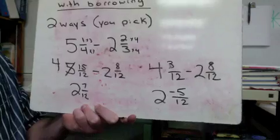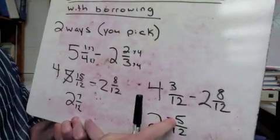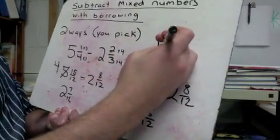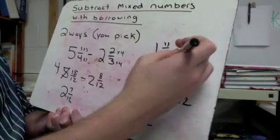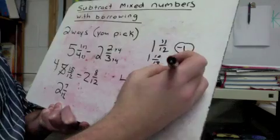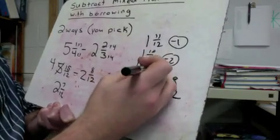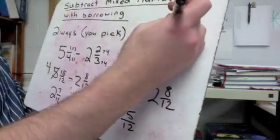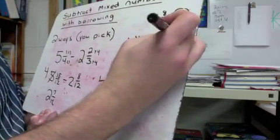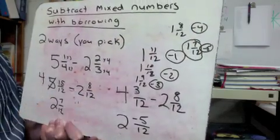So now I'm going to count backwards from two wholes by negative five-twelfths. The first step would be one and eleven-twelfths — taking off negative one. One and ten-twelfths would be taking off negative two. One and nine-twelfths would be negative three. One and eight-twelfths would be negative four. And one and seven-twelfths would be our negative five. So our answer is also one and seven-twelfths.